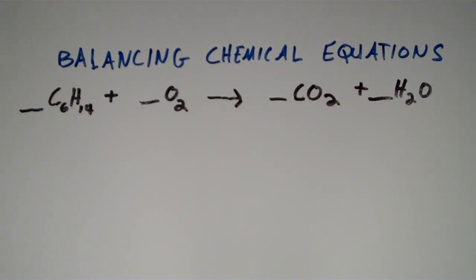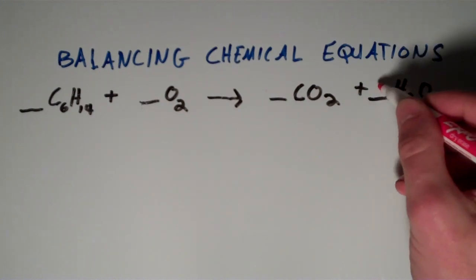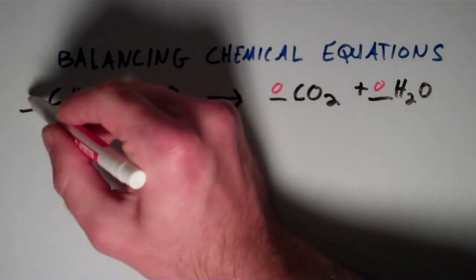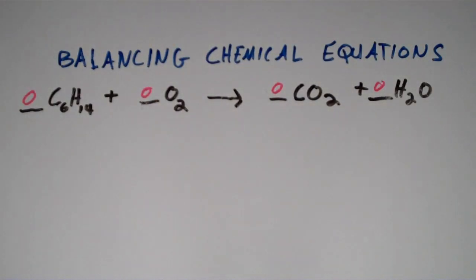Now, the first thing that you want to do is just assign coefficients of zero to everything. So what I'm going to do is I'm going to put a zero on every chemical species in this equation.